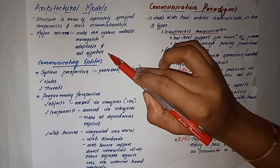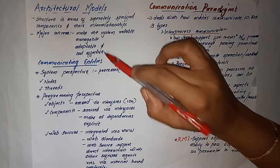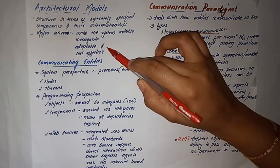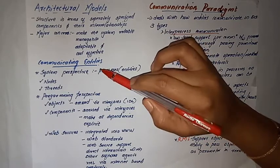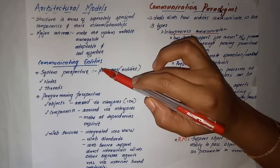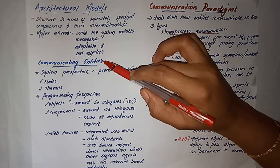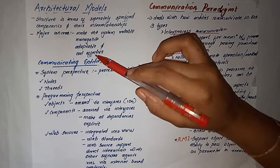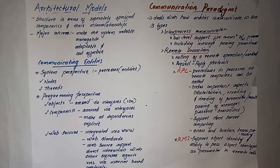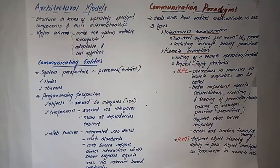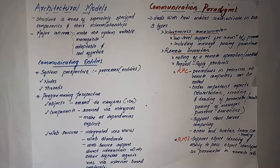The architectural model has three important properties: it is manageable, adaptable, and cost-effective. These are the important aspects of the architecture model, and this is why we describe the model focusing on these three things.